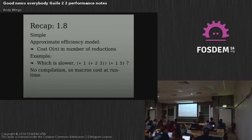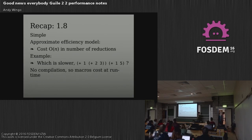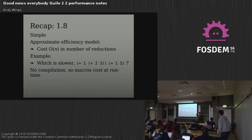If we look back at Guile 1.8 in the bad old days, the approximate efficiency model you would have for your program would be that the cost of your program is O(n) in the number of reductions — you basically had to count the number of open parentheses to see what the cost of your program was. Plus the arguments all have costs as well. So we could say that plus 1.5, even though these are the same program, is cheaper than plus 1, plus 2, plus 3, because the one on the left has more reductions and the one on the right has fewer.